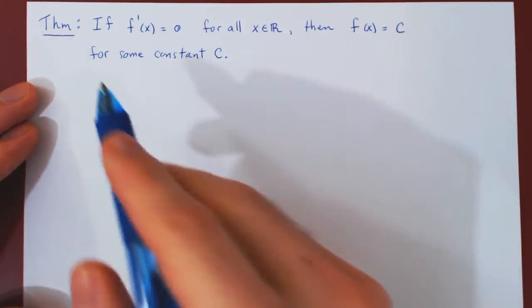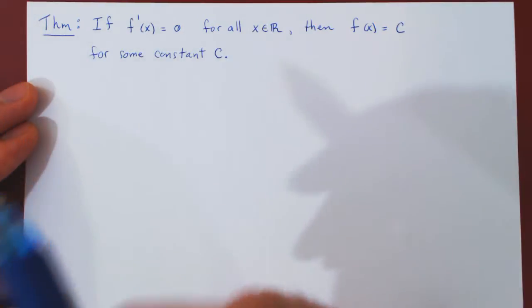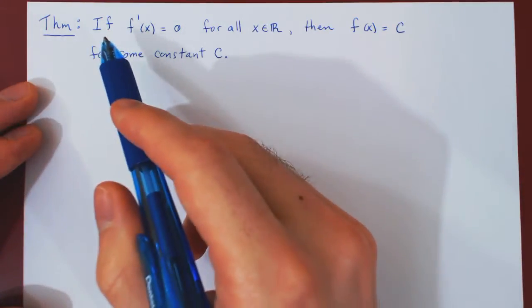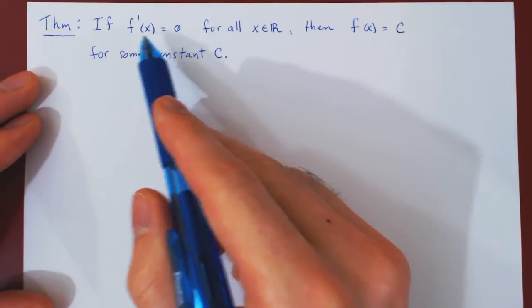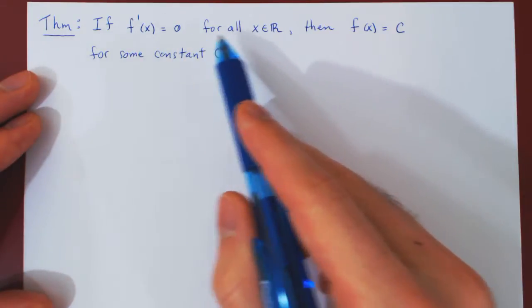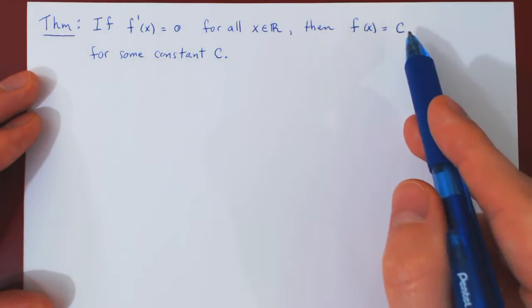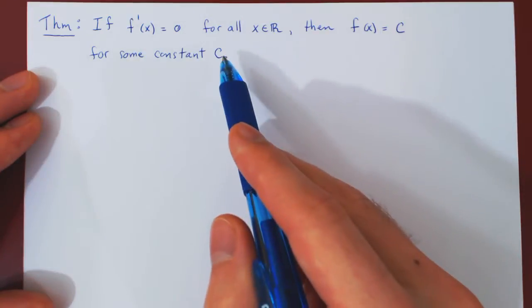OK, so in this video we will prove the following theorem with the mean value theorem. Now here's the result. If the derivative of f is equal to 0 for all values of x, then f of x must equal to c for some constant c.